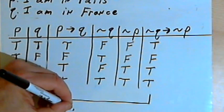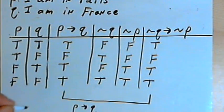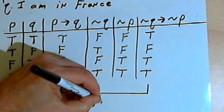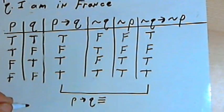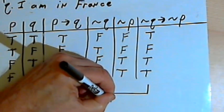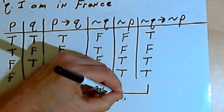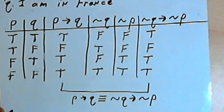You remember we write the logically equivalent sign by writing if P then Q, and then put in the equivalent sign, the three bars, like an equal sign but with an extra bar, and then the contrapositive. If not Q, then not P.